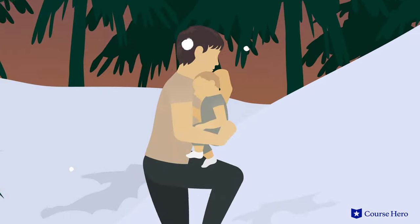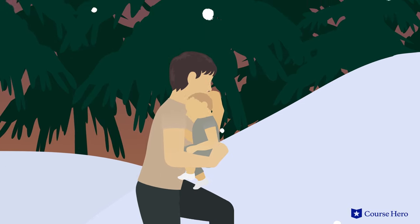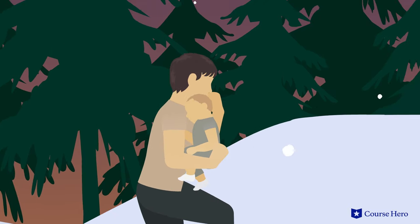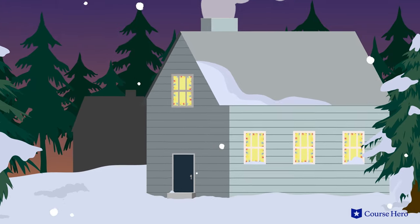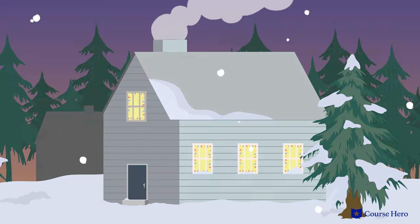Jonas realizes that release, which he thought was just leaving the community, is a euphemism for death. Jonas runs away with Gabriel, a new child his father has been caring for, and searches for the elsewhere, where people care for each other and love still exists.